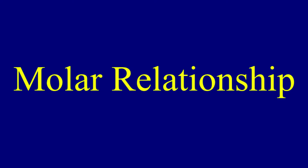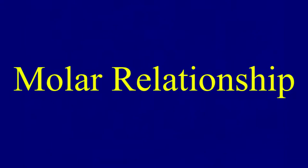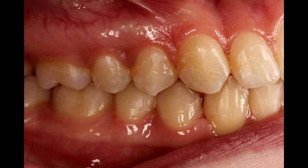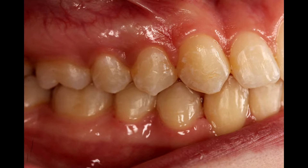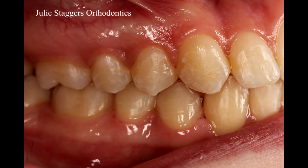The first thing that your doctor looks at is the molar relationship. How this is judged is by how the upper first molar touches the lower first molar. A problem with the molar relationship may just indicate that there is a tooth problem, but it could also indicate that there is an underlying growth problem with how the upper and lower jaw are related to each other.